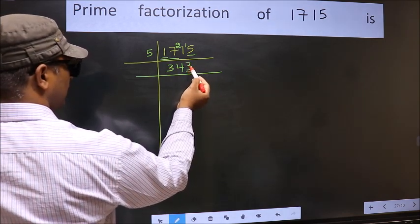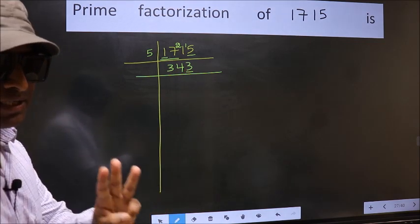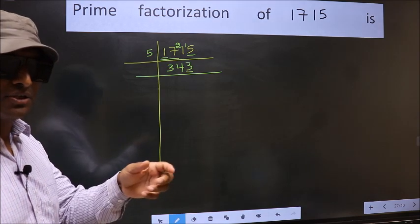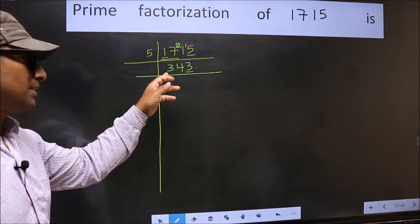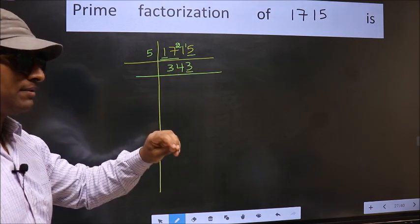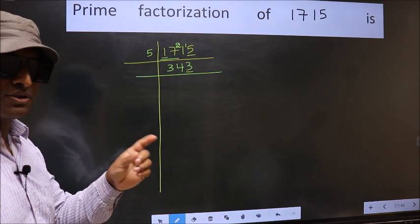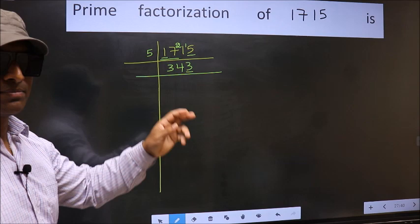Now the last digit is 3, not 1, so not divisible by 2. Next, prime number 3. To check divisibility by 3, we should add the digits. What I mean is, 3+4+3=10. And 10 is not divisible by 3, so this number is also not divisible by 3.